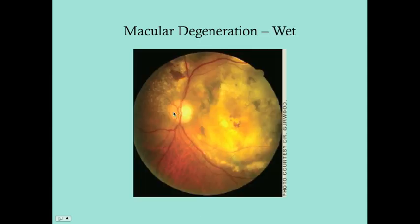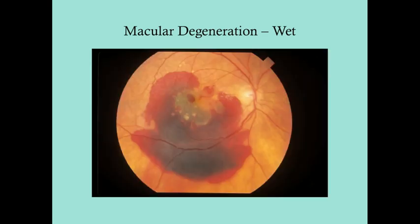Wet AMD is associated with scarring and bleeding. You can see the scarring as brownish-blackish tissue, an area of active inflammation, and hemorrhages. You may also see drusen, but remember drusen can be seen in anybody. In another image, there is scar tissue right over the macula along with hemorrhaging.